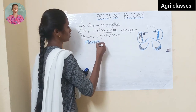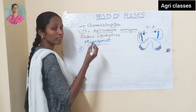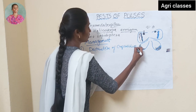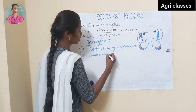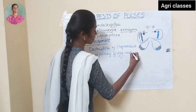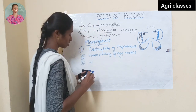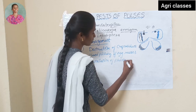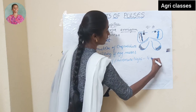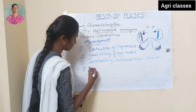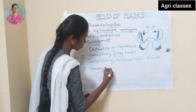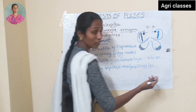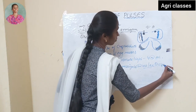For management: first, we should destroy the crop residues. Then hand picking of egg masses. Then installation of pheromone traps at the rate of 4 per acre. Then growing of trap crops like marigold at the rate of 100 per acre — it acts as an ovipositional trap.